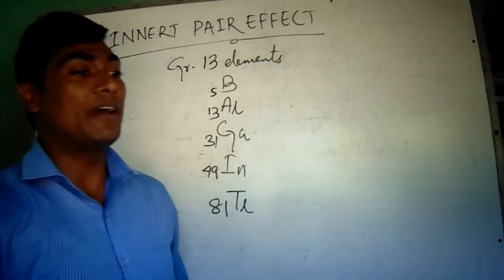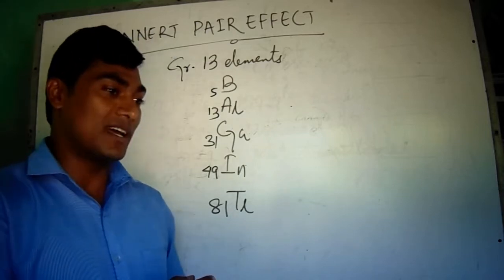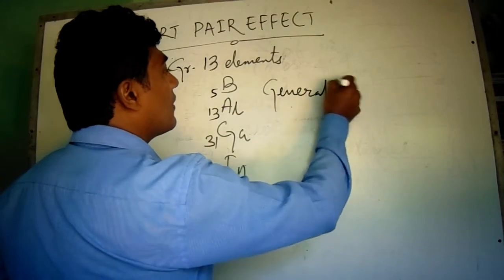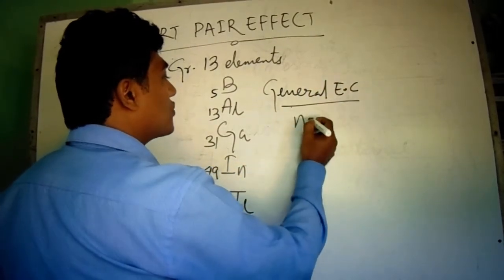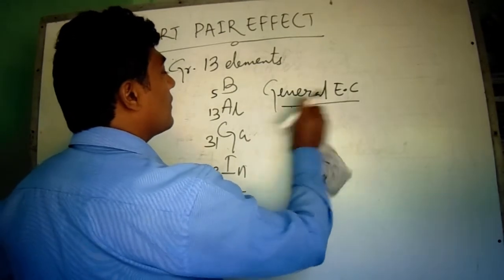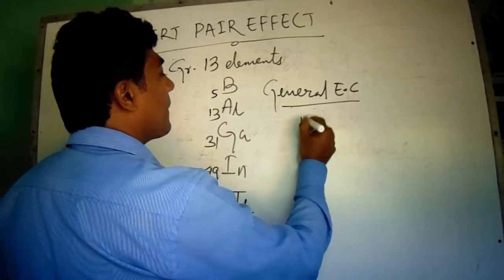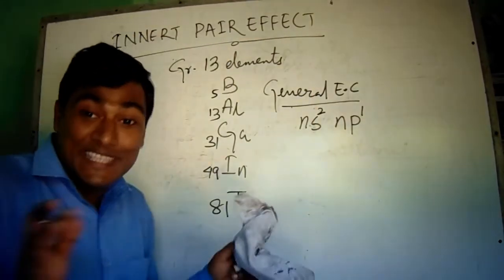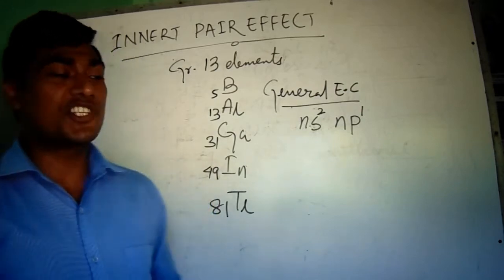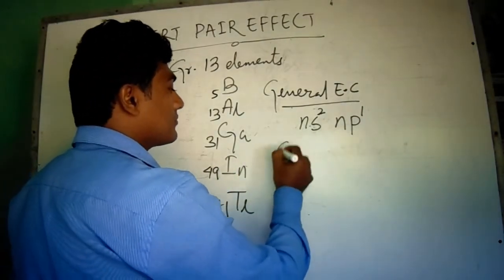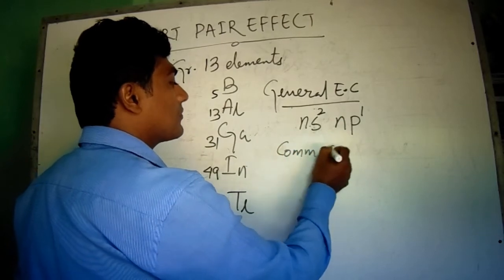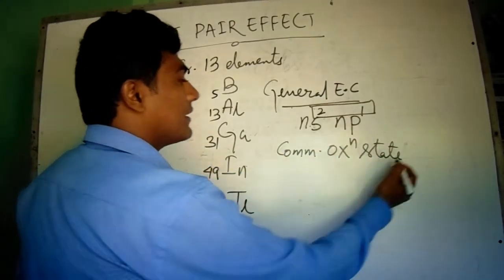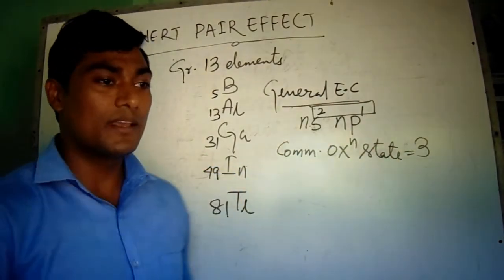They have the general electronic configuration as Ns2 Np1. This suggests the common oxidation state is +3.